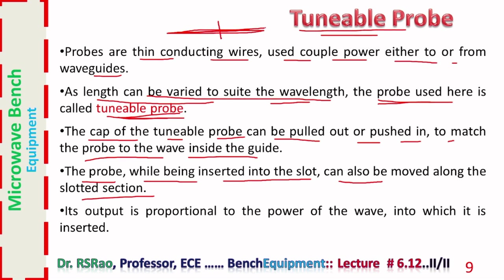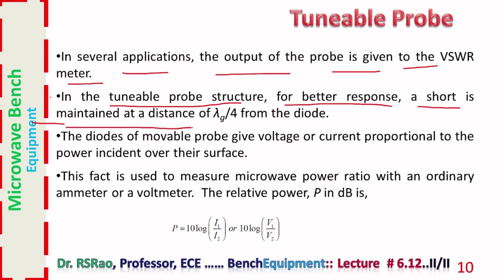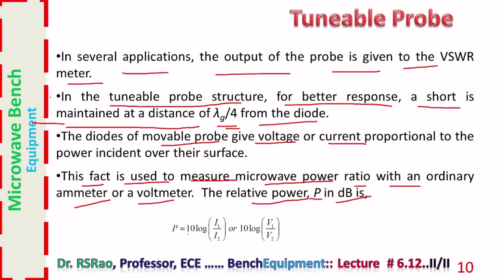The probe can be moved horizontally, and its output is proportional to the power of the wave into which it is inserted. In several applications, the output of the probe is given to the VSWR meter. In the tunable probe structure, for better response, a short is maintained at a distance of λG/4 from the diode. The diode gives voltage or current proportional to power, since tunable probes employ a square law crystal diode. The relative power P in dB is P = 10 log(I1/I2) or 10 log(V1/V2).